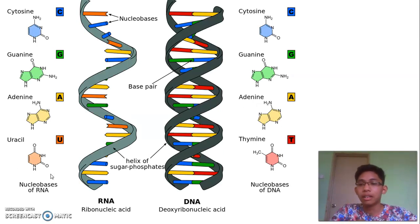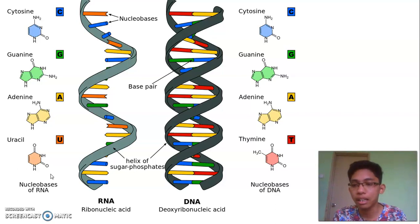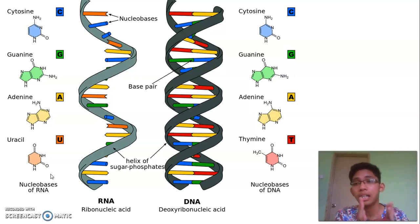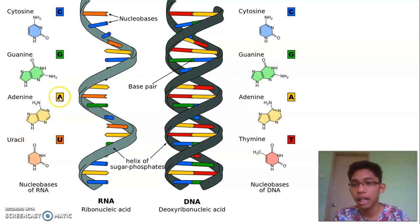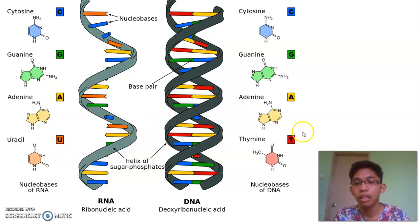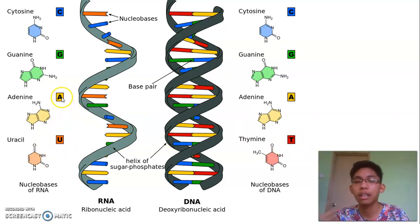This gives us the bigger picture of the differences between RNA and DNA. Similarly for RNA, A pairs with U because T in DNA is replaced by U in RNA. So the pairing principle remains the same.